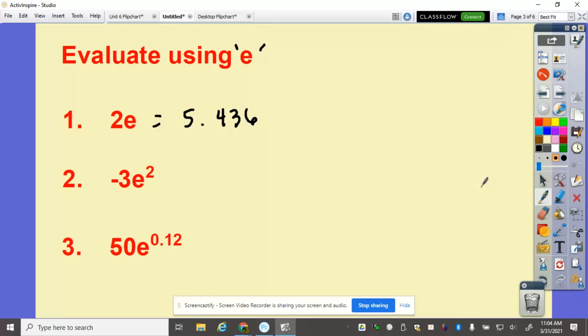10,000. But there's a 5 there, so this would be 7 here. 5.4365, so this would be 7.